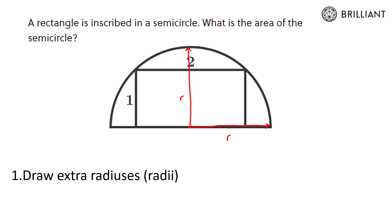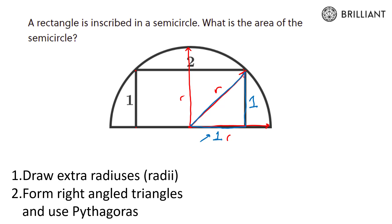Well, what if I drew it here? This radius is useful because it also tells us something about the rectangle. If we look at this right angle triangle, it's formed partly from the rectangle. We know these missing lengths: this length is 1, and this length down here is half of the rectangle, so it's also 1. That leads us to our second trick: form right angle triangles and use Pythagoras. You'll be surprised at how many of these circle questions have hidden right angle triangles within them.